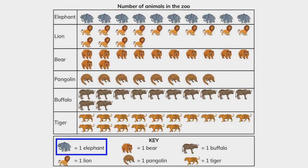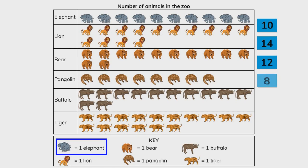There are ten elephants, fourteen lions, twelve bears, eight pangolins, twelve buffalo and sixteen tigers. There are a lot of animals in the zoo.